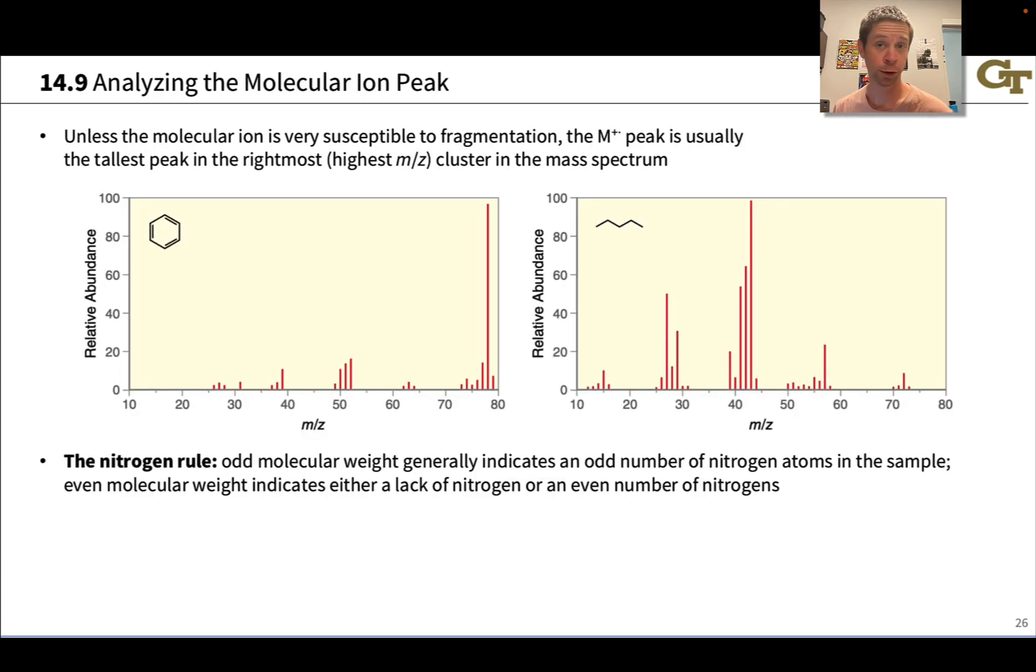Often the first thing we want to do when analyzing a mass spectrum is find the molecular ion peak. Unless the molecular ion is very susceptible to fragmentation, the molecular ion peak is usually the tallest peak in the rightmost cluster in the mass spectrum.